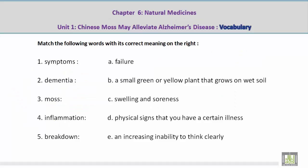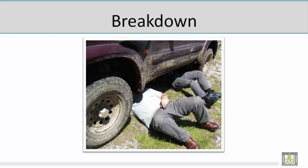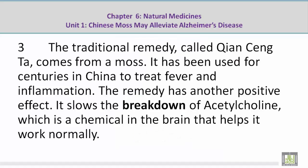Number 5: Breakdown. Mohamed, please give us the correct meaning on the right. A — Failure. Now let's take a look at a picture related to the vocabulary word 'breakdown.' I see some people trying to fix a car because it broke down — failed. That's what breakdown means: failure. Now let's take a look at a paragraph: It slows the breakdown of acetylcholine, which is a chemical in the brain that helps it work normally.